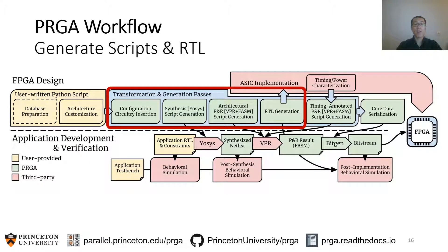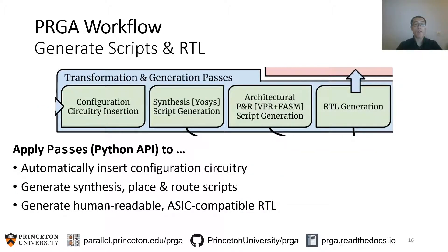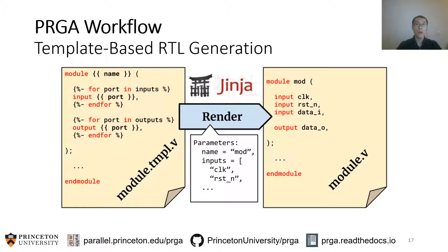After specifying the FPGA architecture, PRGA does all the heavy lifting with passes, which are part of the PRGA API. These passes will automatically insert configuration circuitry into the architecture, then generate synthesis and place-and-route scripts. Most importantly, these passes generate human-readable, ASIC-compatible RTL for the FPGA. PRGA generates RTL based on parameterized templates, so you may affect RTL generation by changing only the template, independent of the Python code base.